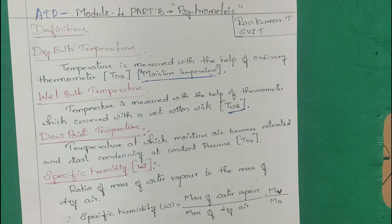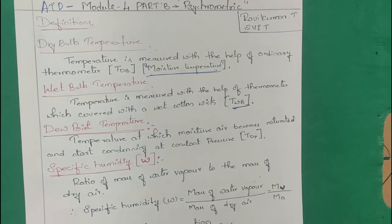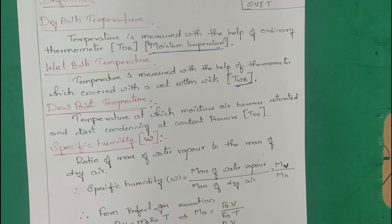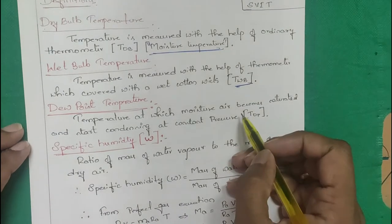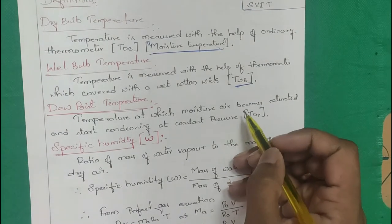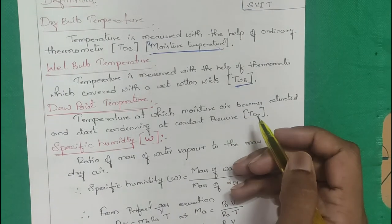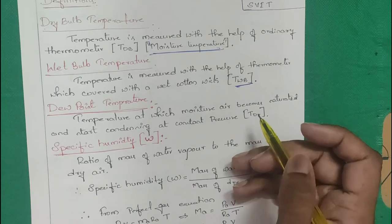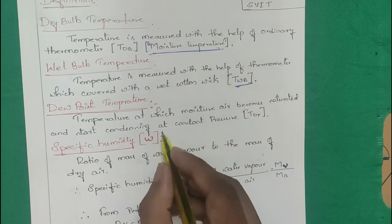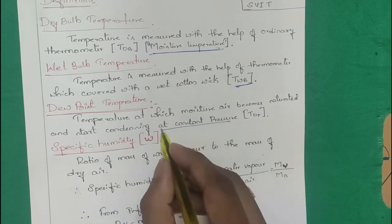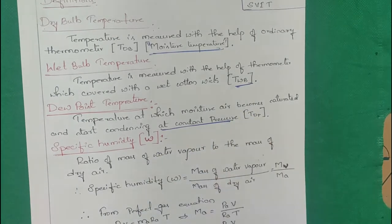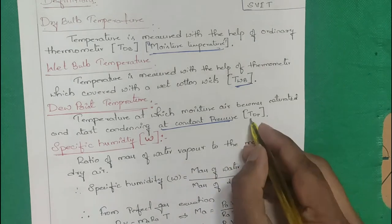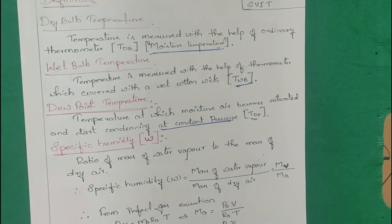The dew point temperature is the temperature at which moist air becomes saturated and starts condensing at constant pressure. That is the dew point temperature.